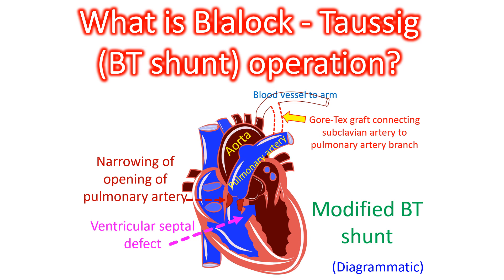Blalock-Taussig shunt is an operation done to improve the oxygen levels in blood of children with certain birth defects of the heart.